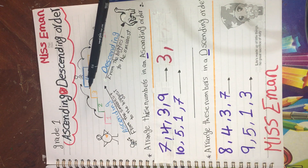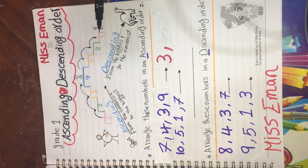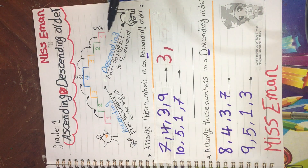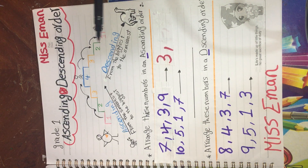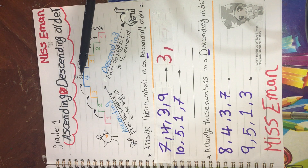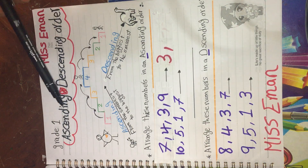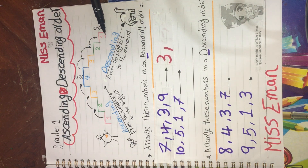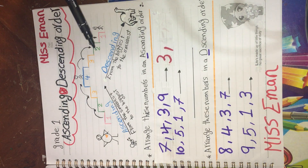Here is our friend Adam again. He is on step number four, and he has to come down to step number one. So let's help him. We are going to start from step number four, three, two, one. And he is arriving! Do you know what it is? It's descending. Descending means going down from the biggest number to the smallest number.